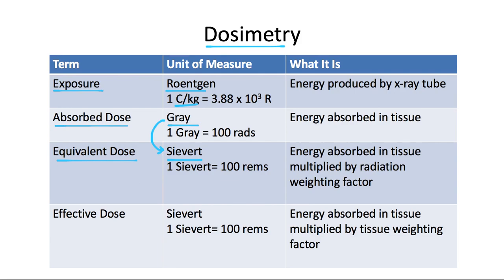One sievert is equal to 100 rems. The effective dose is the equivalent dose taken one step further — it accounts for not only the type of radiation but the type of tissue absorbing it, whether skin, bone marrow, esophagus, etc. You multiply by a tissue weighting factor, which indicates that certain human tissues are more sensitive to radiation than others. For instance, lungs are more sensitive than skin.